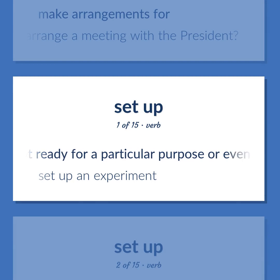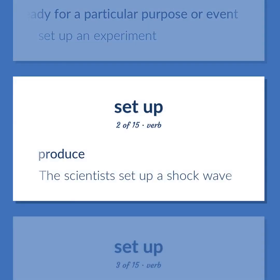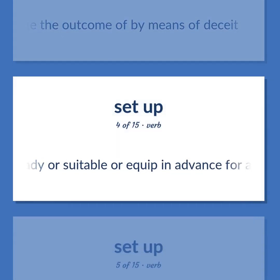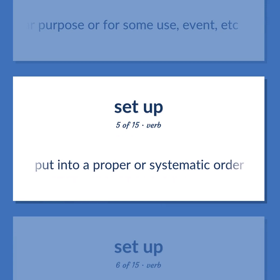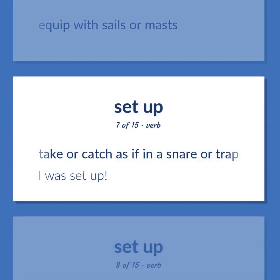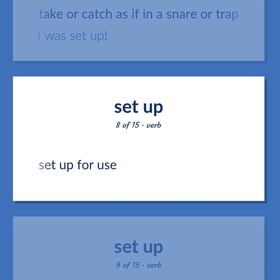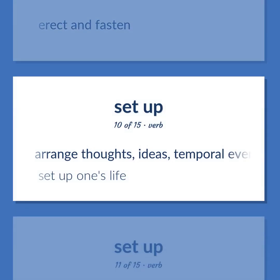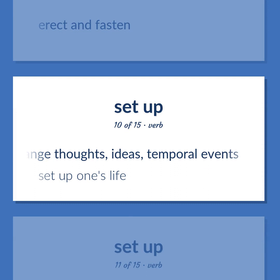Set up: get ready for a particular purpose or event — example: set up an experiment. Produce — example: The scientists set up a shock wave. Arrange the outcome of by means of deceit. Make ready or suitable or equip in advance for a particular purpose or use, event, etc. Put into a proper or systematic order. Equip with sails or masts. Take or catch as if in a snare or trap — example: I was set up. Set up for use. Erect and fasten. Arrange thoughts, ideas, temporal events — example: set up one's life.